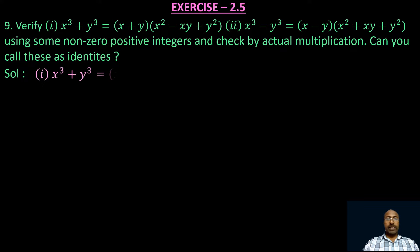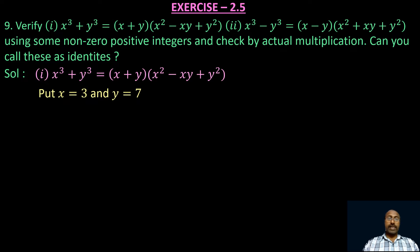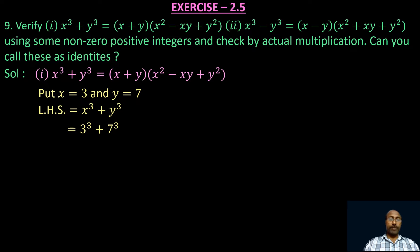Take the first one: x³ + y³ = (x + y)(x² - xy + y²). Let us take some non-zero positive integers for the values of x and y. I am taking x = 3 and y = 7. What is the value of the left hand side and the right hand side? If both are equal, then the given identity is true. Let us find the value of LHS, which is x³ + y³. Substituting x = 3 and y = 7, we get 3³ + 7³ = 27 + 343 = 370.